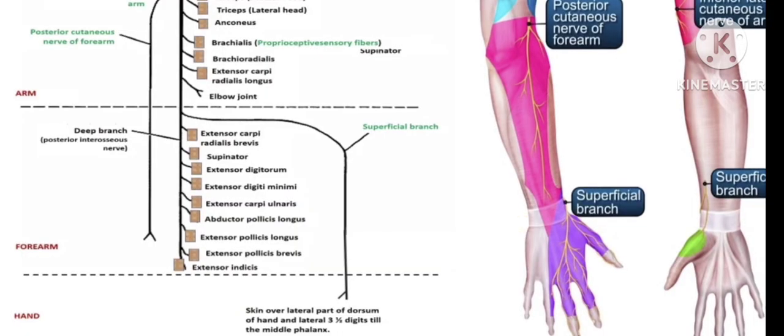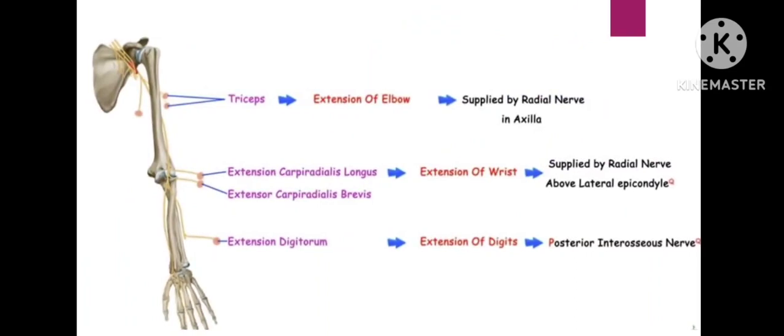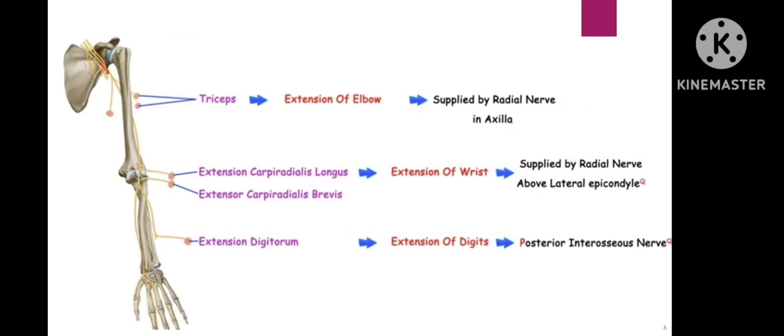So that is all about the motor and sensory supply of the radial nerve. The triceps performs extension of the elbow joint. Extensor carpi radialis longus and brevis perform extension of the wrist joint. The extensor digitorum muscle helps in extension of the fingers.